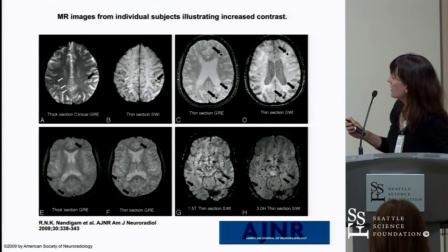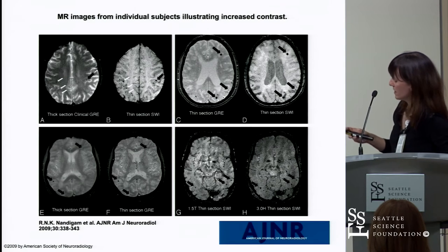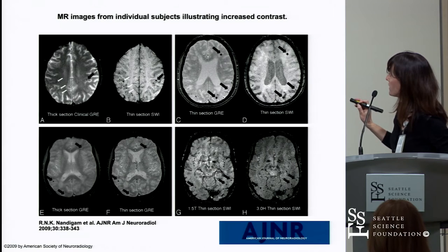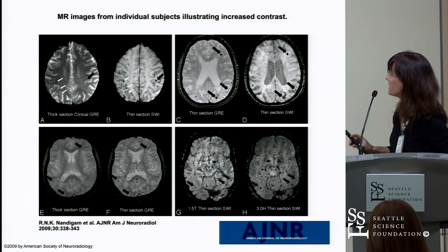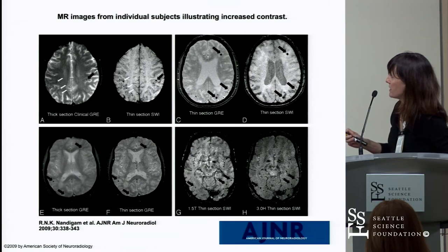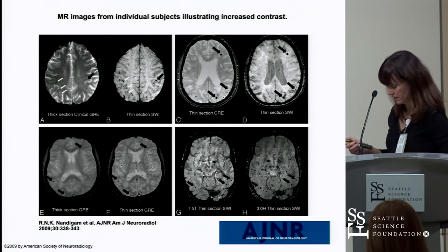Detection of microbleeds also depends on magnet strength. The lower right shows a 1.5 tesla MRI compared to a 3 tesla MRI — the microbleeds are much more easily detected at higher field strength. Similarly, microbleeds are easier to detect on thin slices versus thick slices.